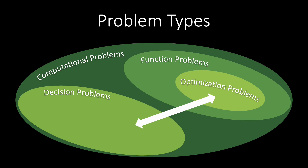If we can solve the optimization problem, then we can also solve the corresponding decision problem. All we need to do is check if the optimal solution has the desired quality. Similarly, if we solve the decision version of an optimization problem for different values of k, we can bound the value of an optimal solution.